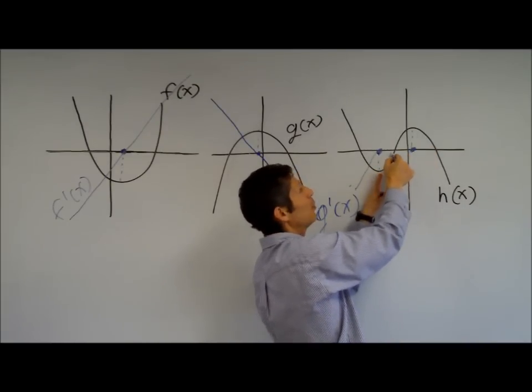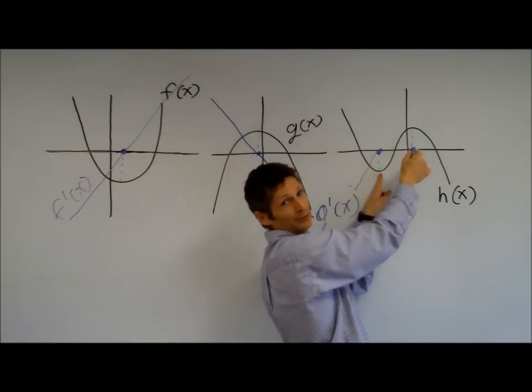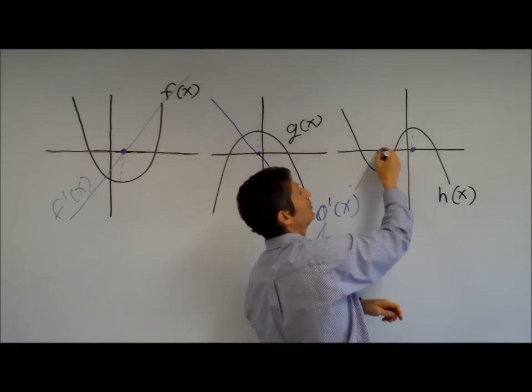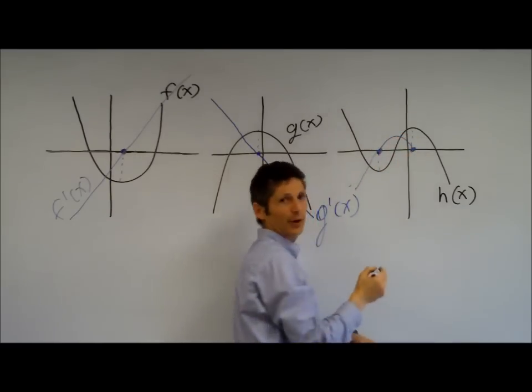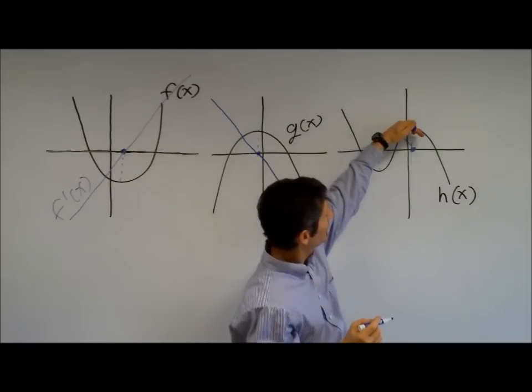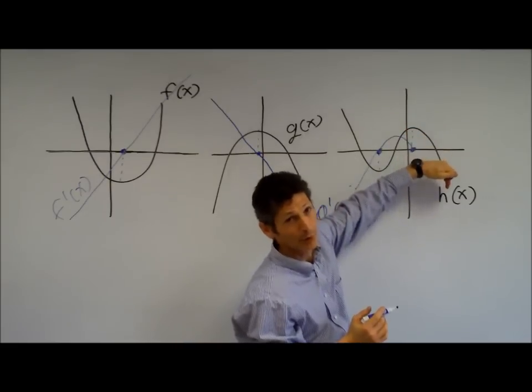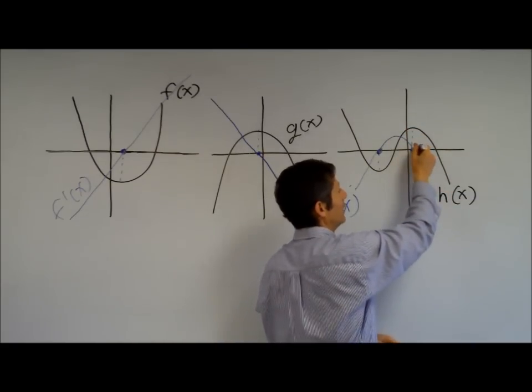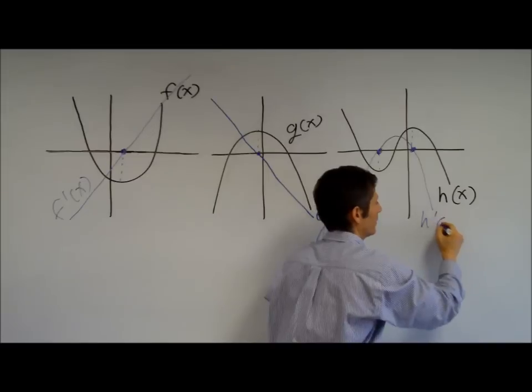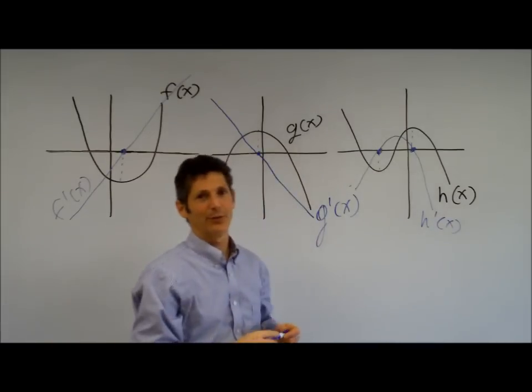Between here and here, the slope is positive, getting more positive, and then getting less positive, returns to zero. So my derivative should be a little positive, and then go back down to zero. And finally, my derivative, I'm sorry, the slope is getting, it's a little bit negative, getting more and more negative. So my derivative should have a negative value, getting more and more negative. And that is a derivative.